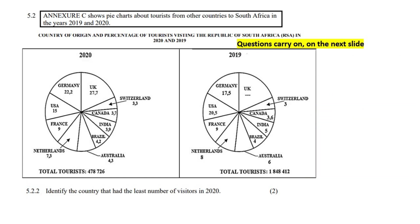The next question says: identify the country that had the least number of visitors in 2020. Looking at the 2020 chart for the lowest number, it is Switzerland at 3.3%.